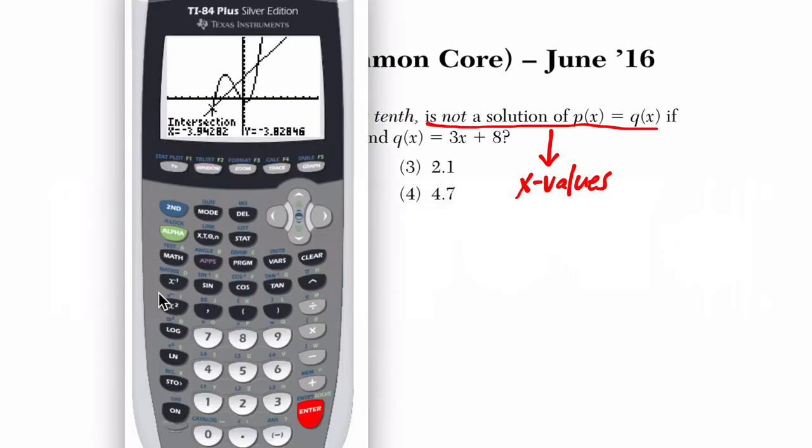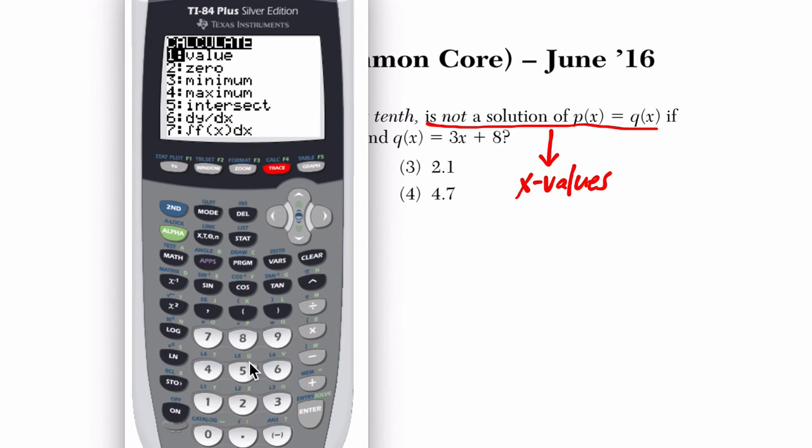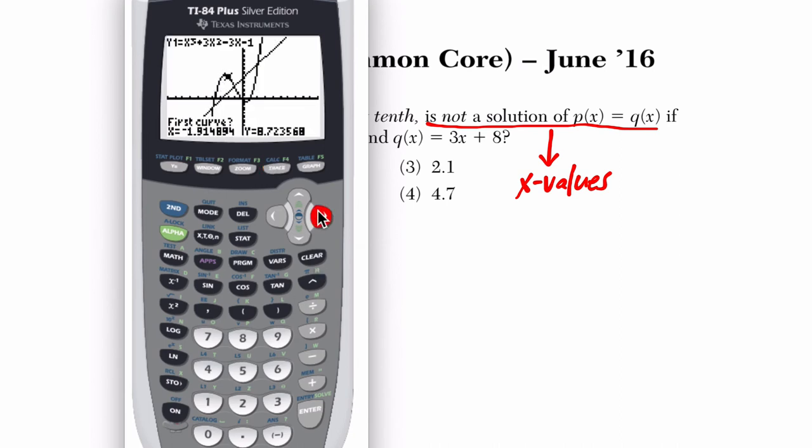All right. And let's go back. Do it again. 2nd, trace, intersect, choice 5. I just press the number 5. Scroll to the next intersection point. Pretty close. Enter, enter, and then I'm going to get closer to it.